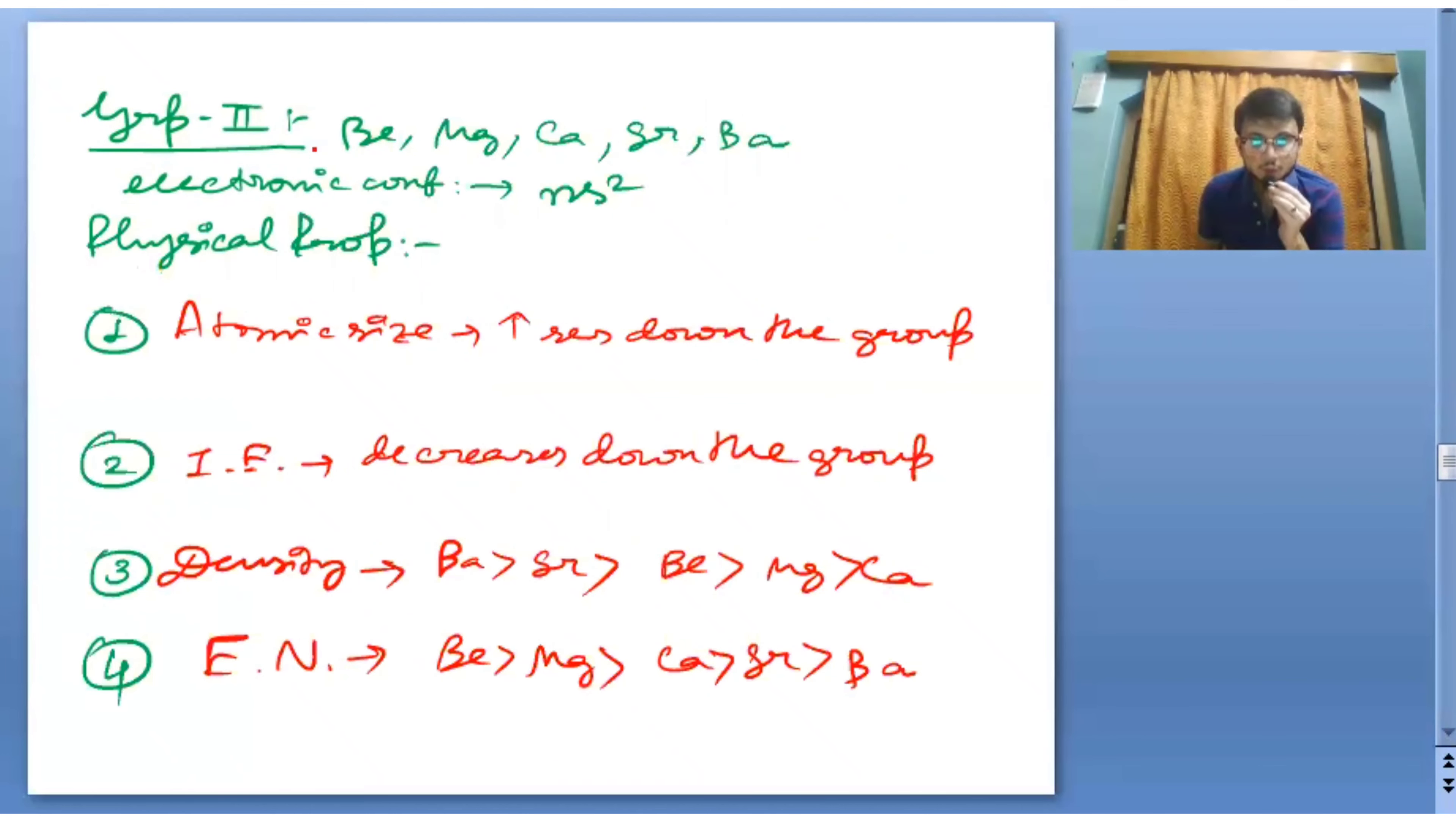Let us discuss about group 2. Electronic configuration and physical properties: atomic radii increases down the group.